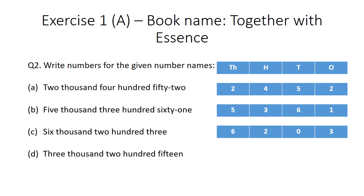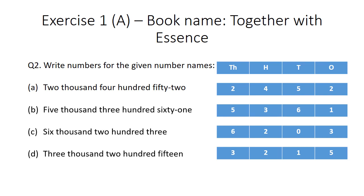Part D: 3,215. With 3,000 is written, so we will write 3 at the thousands place. With 2, hundred is written, so we will write 2 at the hundreds place. For 15, we write 1 at the tens place and 5 at the ones place.